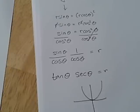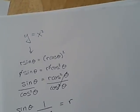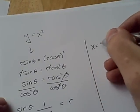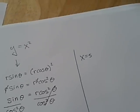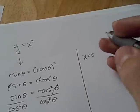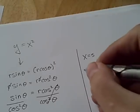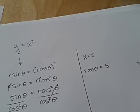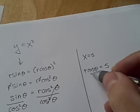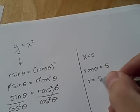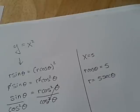Let's try one more. This is a simple vertical line in rectangular coordinates. But if we make a substitution, replacing x with r cosine theta, then divide through by cosine, we get r equals 5 secant theta. And this is our polar form.